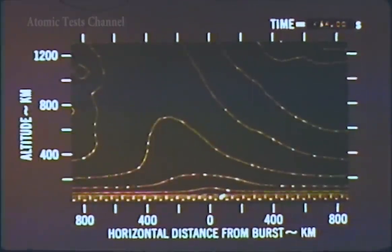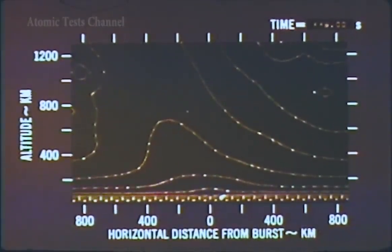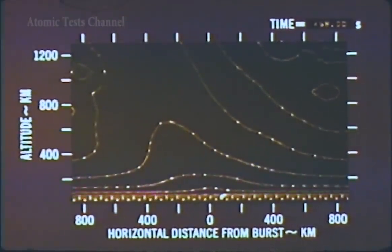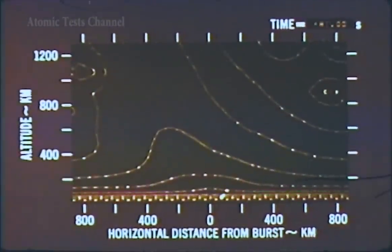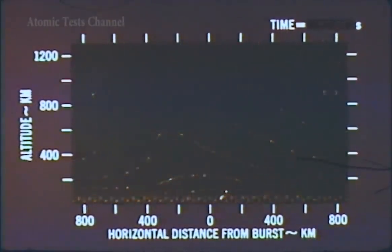A second burst in the same region would be detonated in an atmosphere altered from its normal state. The effects observed from the second explosion would therefore depend on the location, yield, and time of the first explosion.